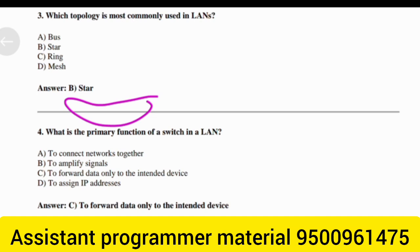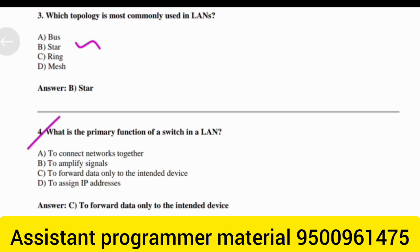Which topology is most commonly used in LANs? Answer: Option B — Star. What is the primary function of a switch in a LAN? Answer: Option C — To forward data only to the intended device.